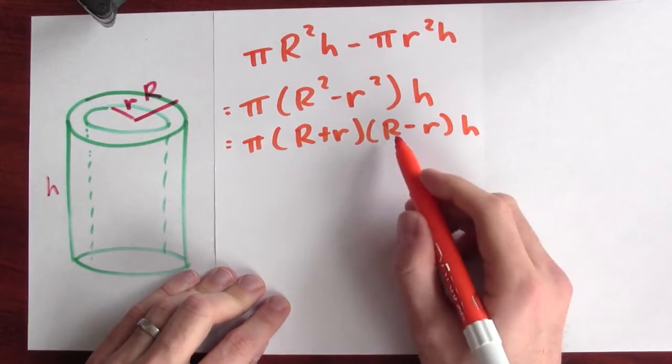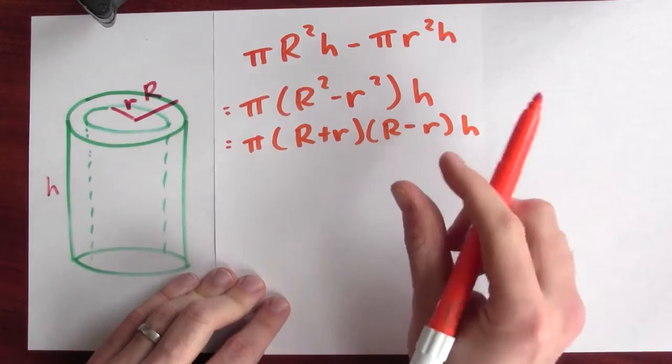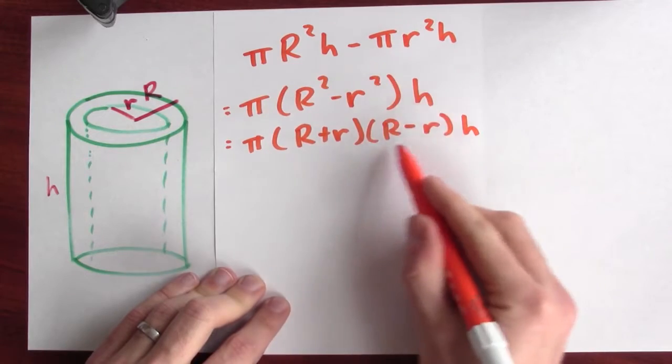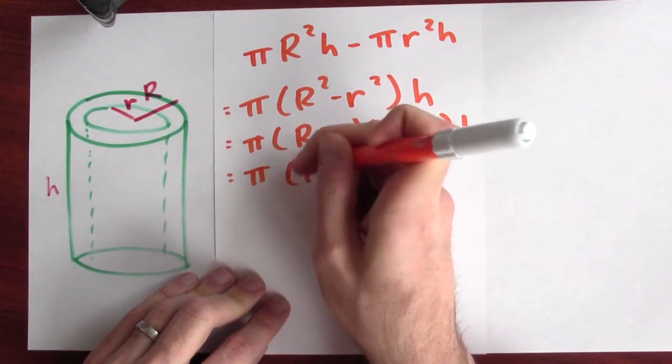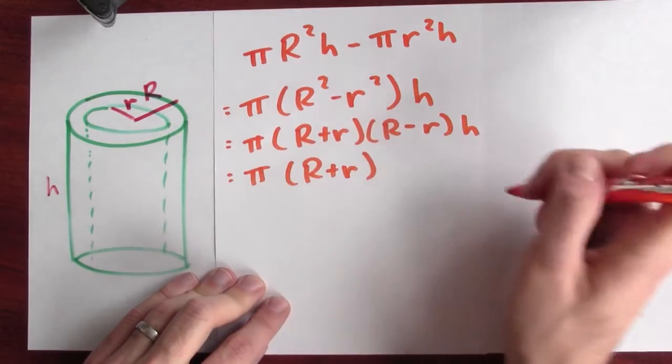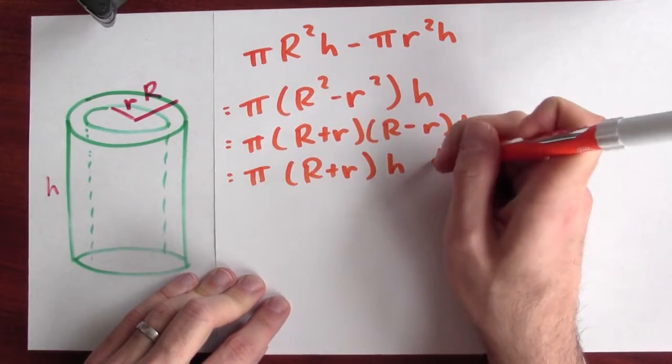I'm thinking of the difference in these radii as being really small. So I'm going to rewrite this term as dr. So this is π big R plus little r, and I'll write h dr.